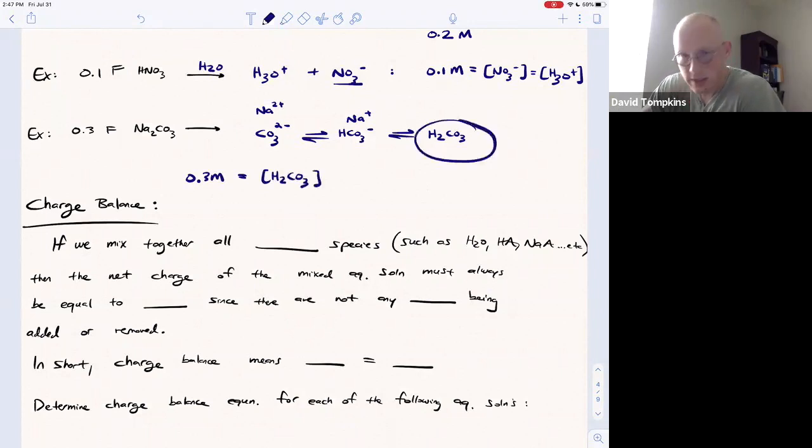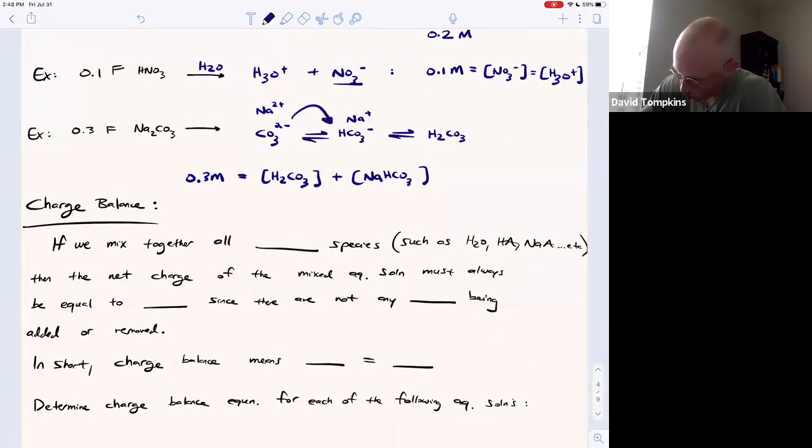Any of this diprotic acid that formed came from protonating the carbonate and it got consumed. Any of the monoprotic form, sodium bicarb, this came from protonating carbonate with water.